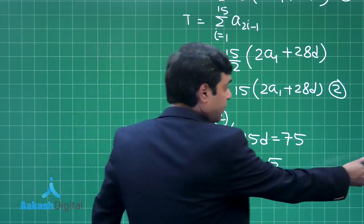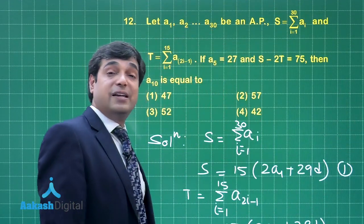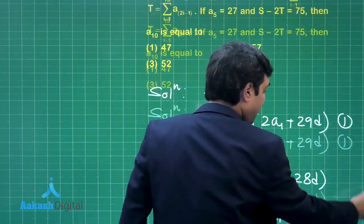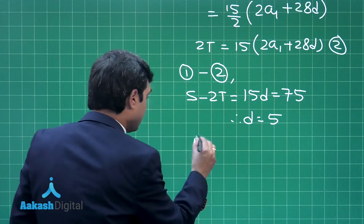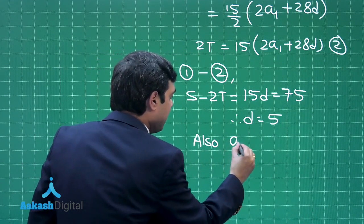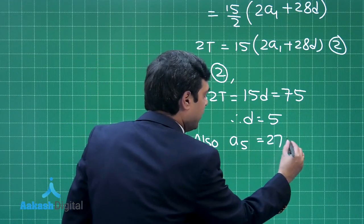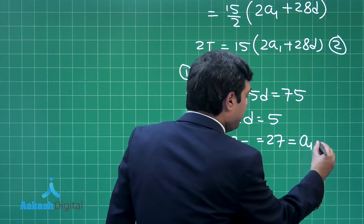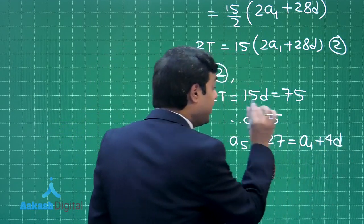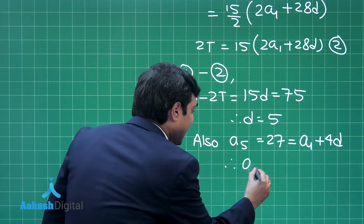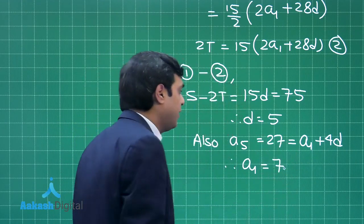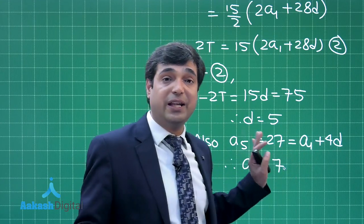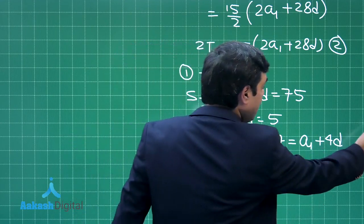Next, it is also given to me a₅ is 27. So let us write down a₅. What is a₅? a₁ + 4d. So it is a₁ + 4d, d is 5. We get a₁ = 7 because it is 27 - 20 giving you 7. This is clear.